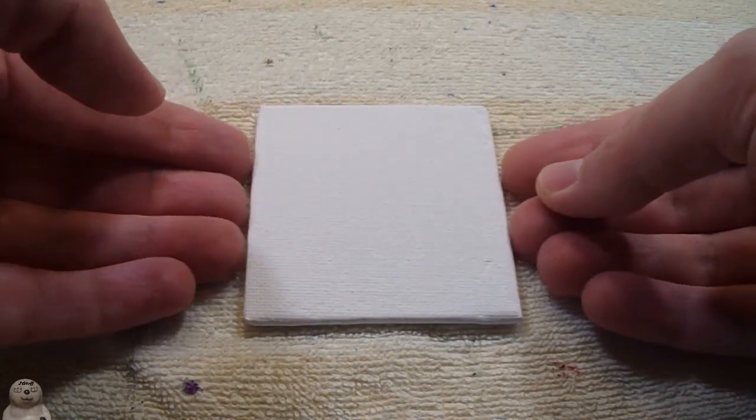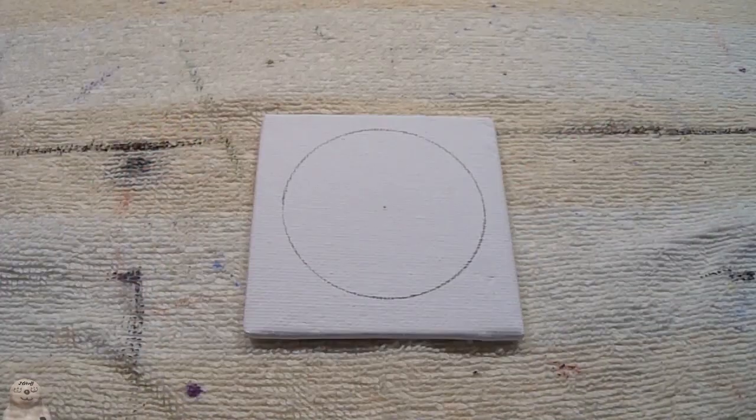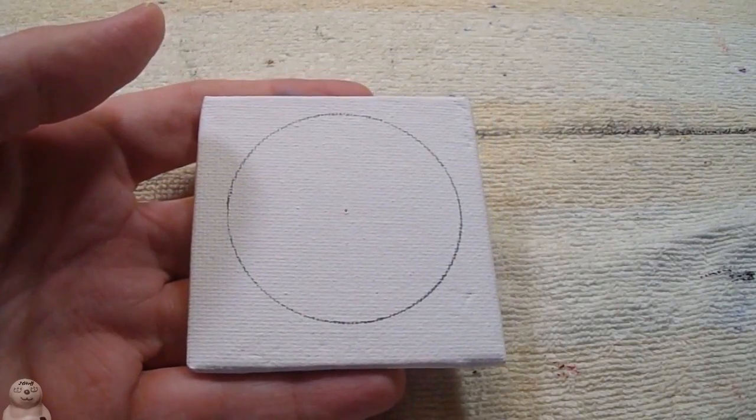First I want a nice round circle, so let's get that circle. There it is. And for the background color, I decided to go with light blue.